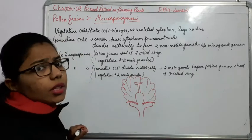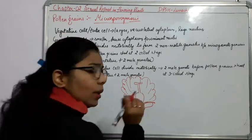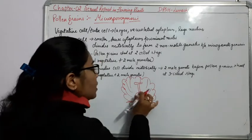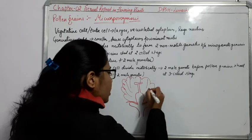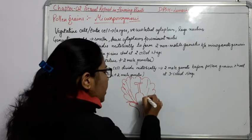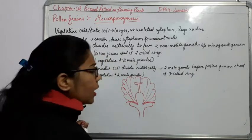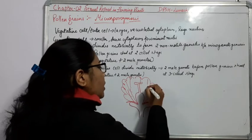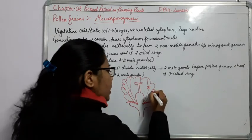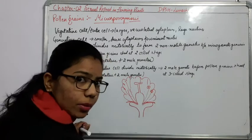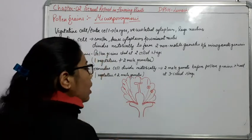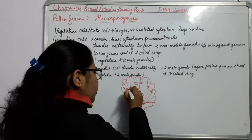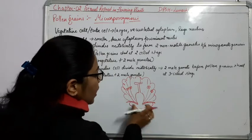In the monoecious flower, both the male and female gametophyte are present in the same flower. This is the female gametophyte. Along with this we are talking about the male gametophyte, which is arising from here. We have done the structure of male gametophyte — these are the anthers, which are bilobed structures connected with the help of a filament.